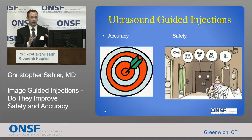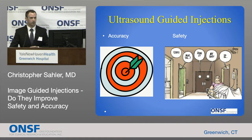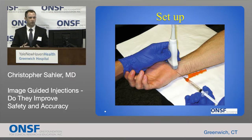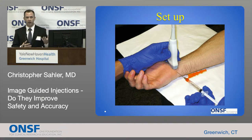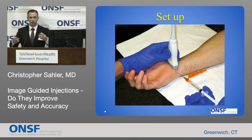The main things we want to talk about for ultrasound injections are accuracy and safety — those are the two big things we're always thinking about with any intervention. The setup is pretty straightforward. Whatever body part you're injecting, you get the patient and yourself in a comfortable position. You're going to have one hand for holding the ultrasound probe — the transducer — lining up the anatomy and visualizing things, and your other hand is going to have the syringe and the needle. It's kind of like a video game — you have two things going on at the same time.